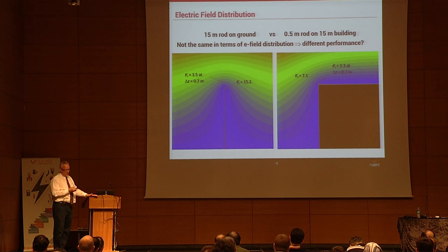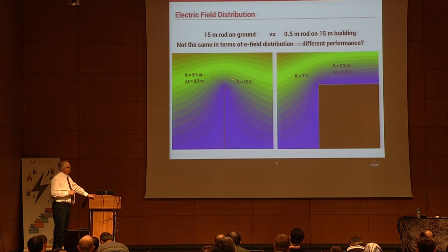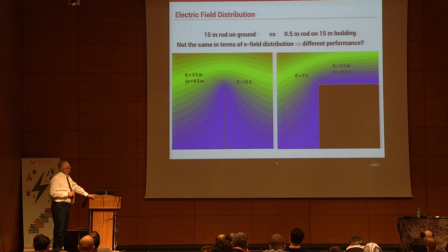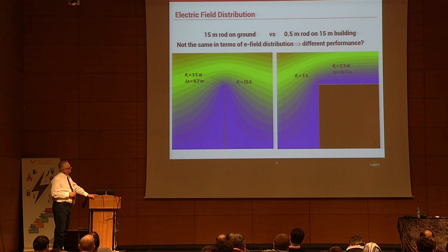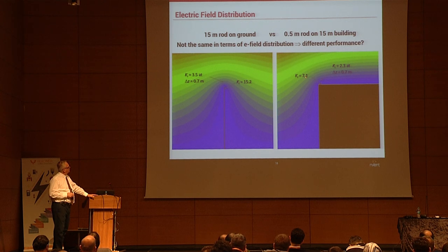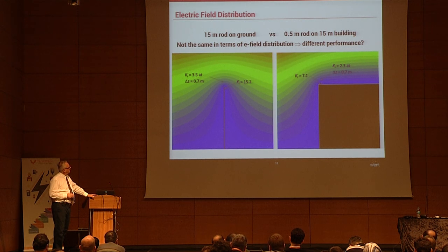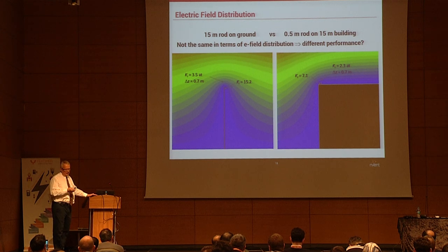This proves the Ki factor point. A 15-meter tall slim structure has Ki of 3.5. A building of the same height but different shape shows the Ki effect factor dropping from 15.2 to 7.1 and 2.3 to 3.5. The placement method should be sensitive to this fact.